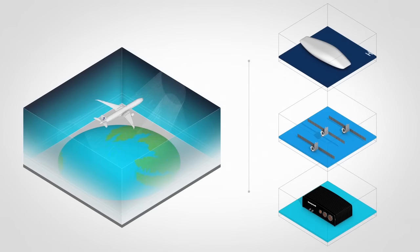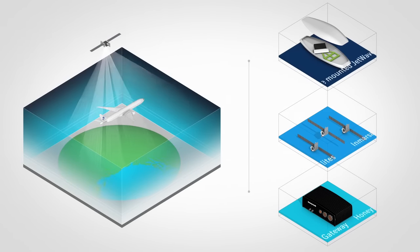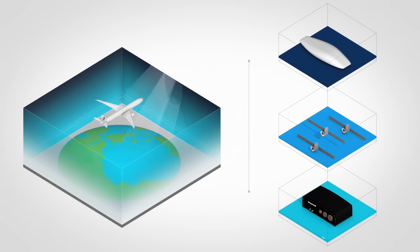GX uses three KA-band satellites providing seamless global coverage via concentrated spot beam technology, resulting in constant uninterrupted passenger connectivity wherever the aircraft is flying.